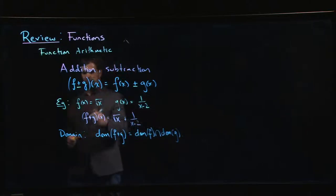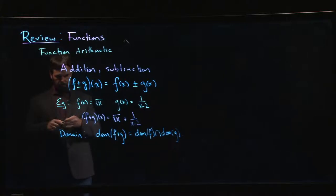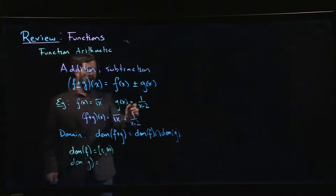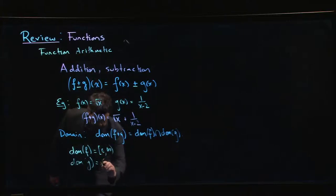So for the example that we have on the go here, we know that f of x has domain 0 to infinity. g has domain, well, everything but 2—so minus infinity to 2, union 2 to infinity.